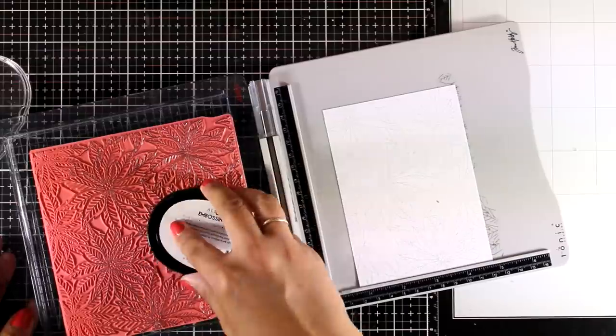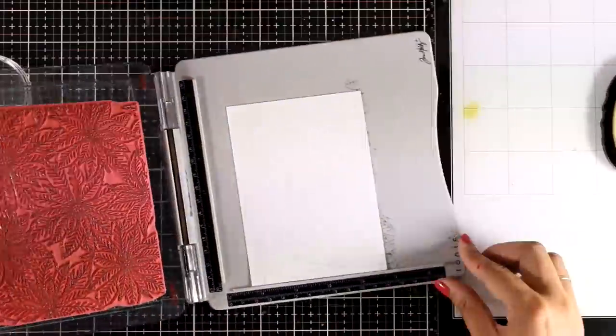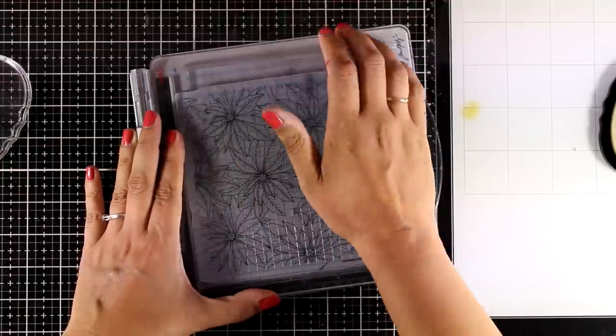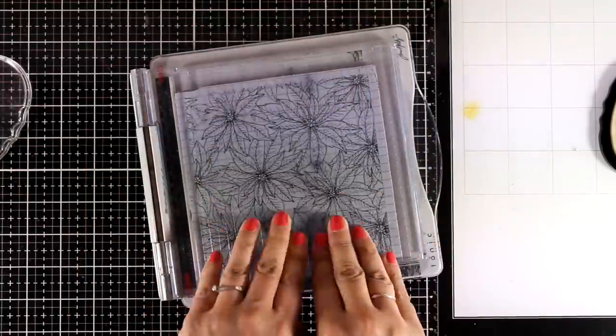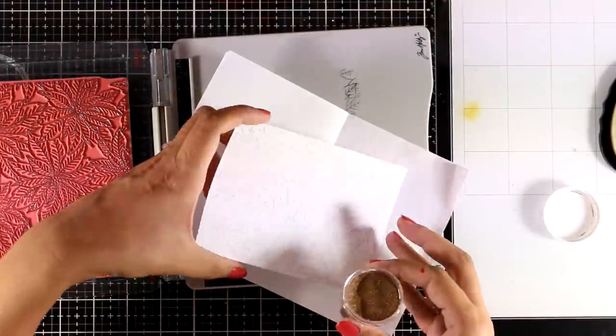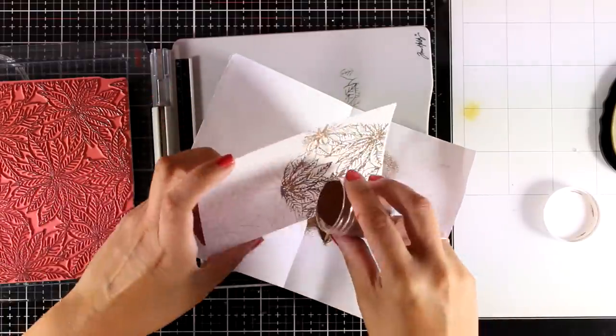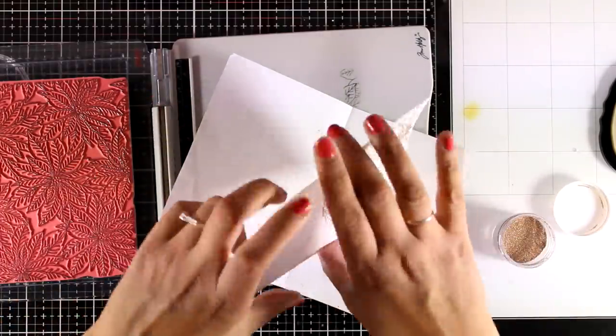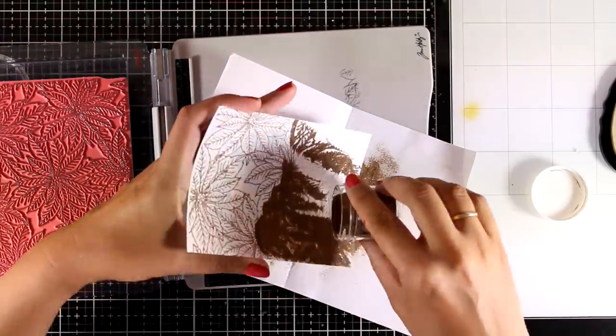So here I used embossing ink and stamped this design on top of white cardstock and I did that twice just to make sure that I got a good impression. And now on top I'm going to apply my embossing powder. Now this is gold embossing powder by Altenew and you can find it linked down below.